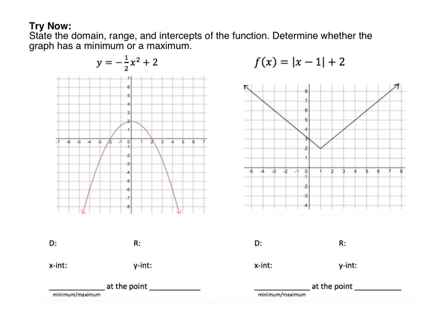Let's end this lesson by having you try two problems on your own. The first problem gives us the graph of a quadratic function — notice the U-shaped graph. The second gives us an absolute value function — the V-shaped graph. Name the domain, range, and intercepts of the function, then determine whether it has a minimum or maximum and list the point where it's located. Please pause the video and give the problems a try. When you hit play again, I'll have the solutions.